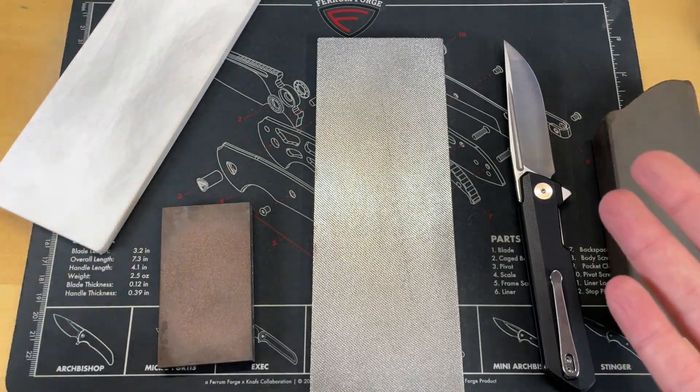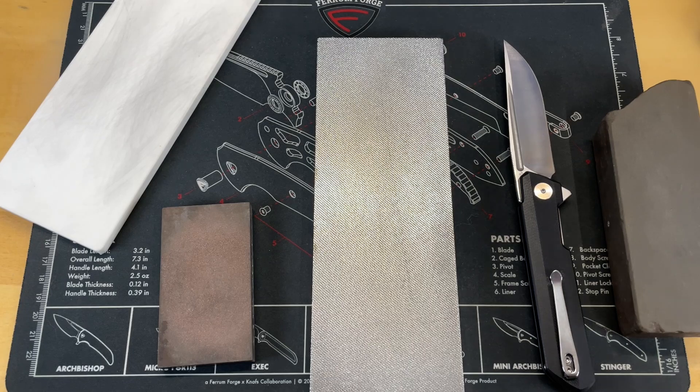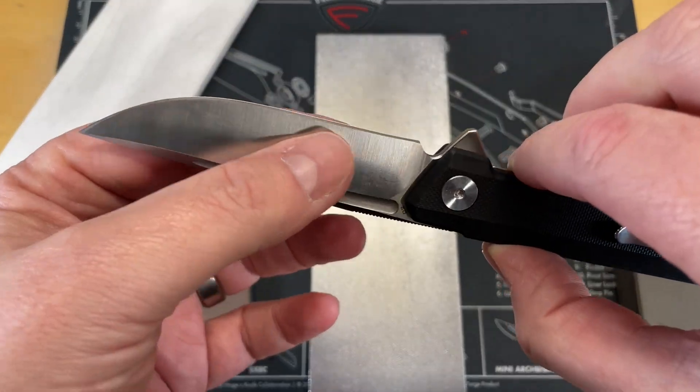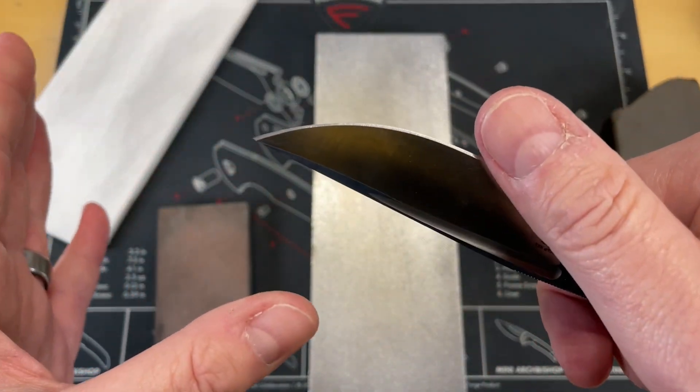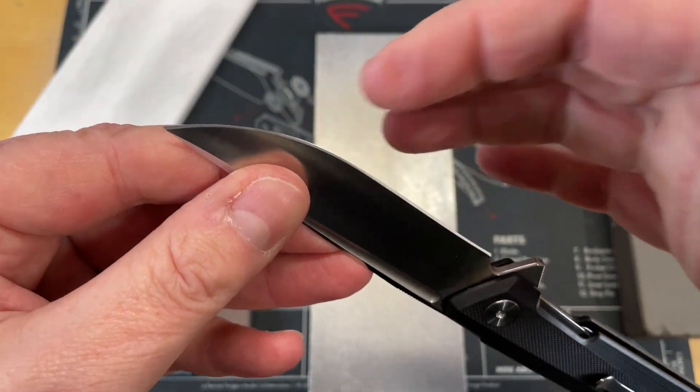Now the big difference is the coarser that edge, the rougher the edge, the more aggressive it's going to cut, but it's not going to leave you a fine finished cut edge.